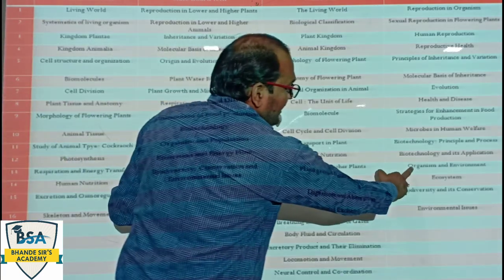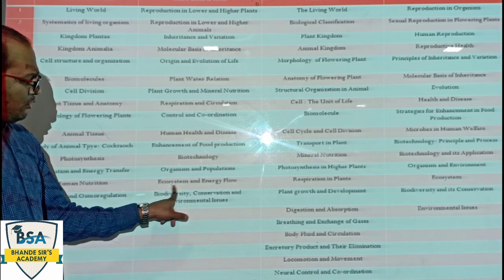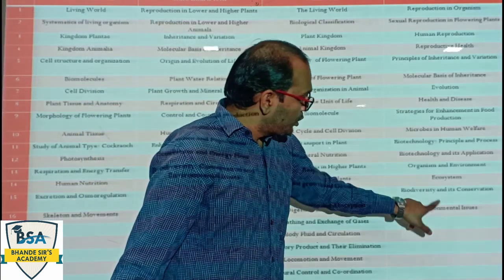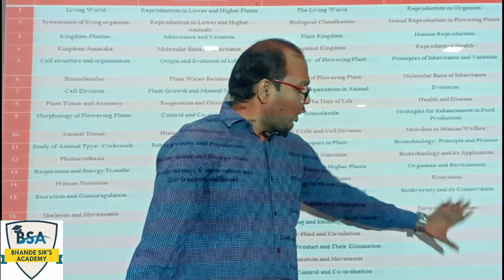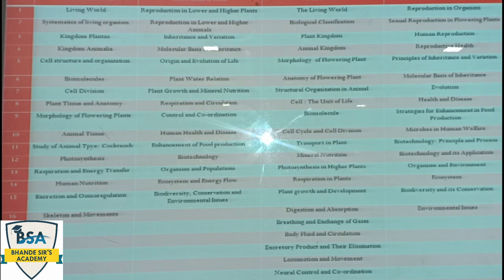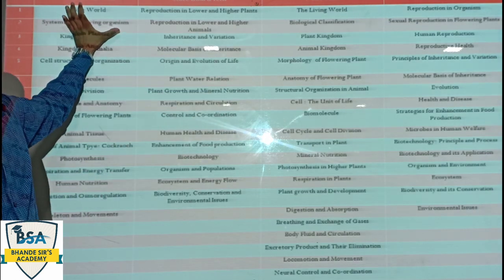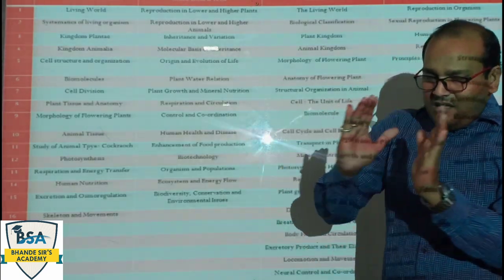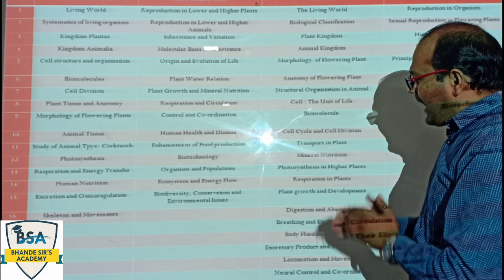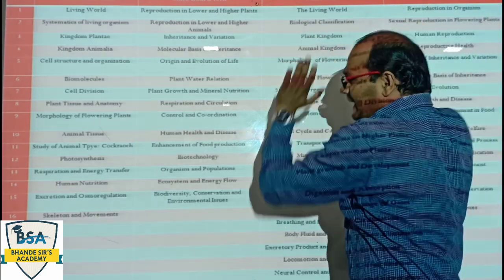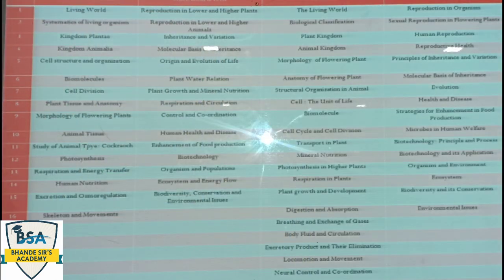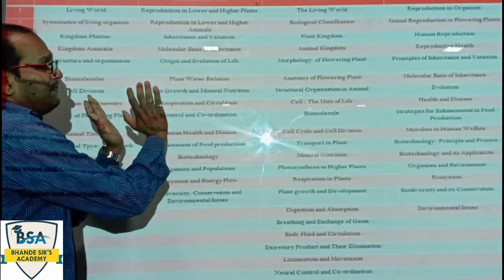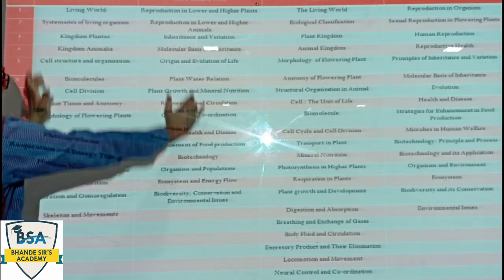Organism and Population unit — Organism and Environment, and Ecosystem. Ecosystem and Energy Flow — this unit is Biodiversity, Conservation and Environmental Issues. So here it is two units — Biodiversity and Conservation, and Environmental Issues — so here it is two units. Comparing State Board to NEET, here it discusses three units. So basically this is the unit-by-unit comparison.